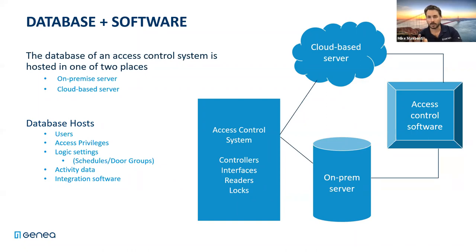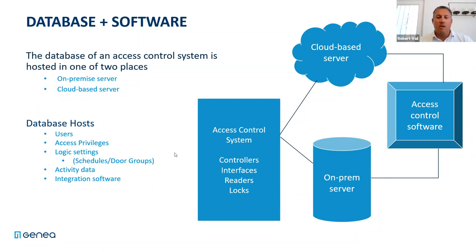The controller will record those events - every time it grants access to a user it records that, and when the connection is restored it will sync that data to the cloud server. The only things you wouldn't be able to do while offline are: see those events in real time, add or remove a user, or remotely unlock the door. But the core function of the access control system is still working, and all events are stored locally and recorded in real time.